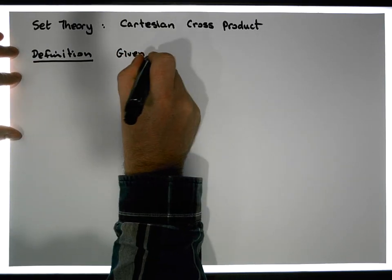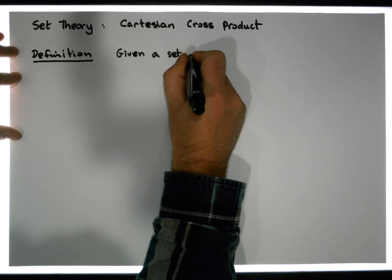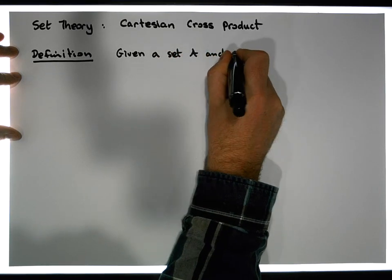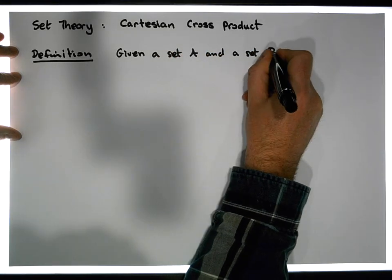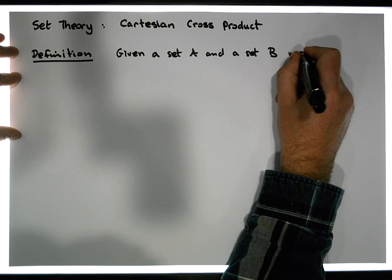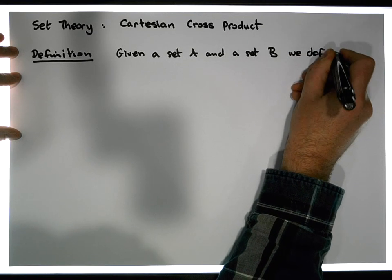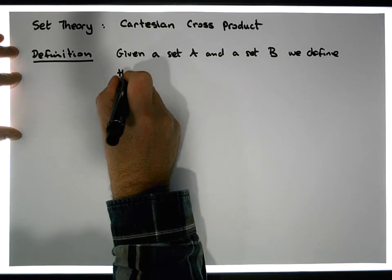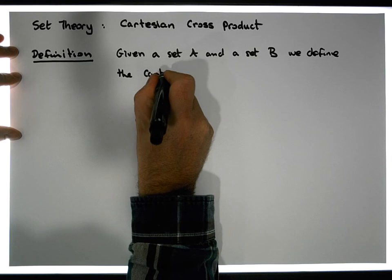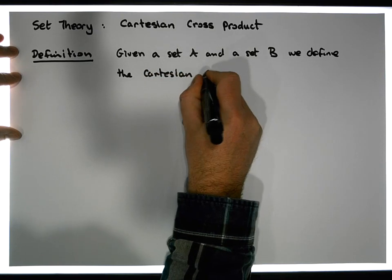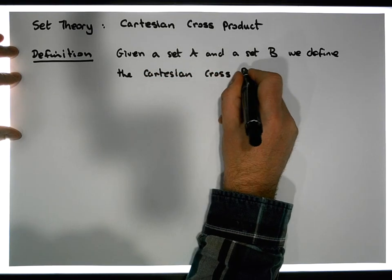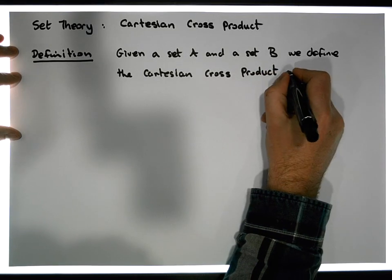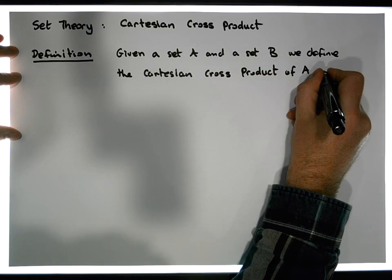Let's just say, given a set A and a set B, we define the cross product, the Cartesian cross product, symbol of A and B.